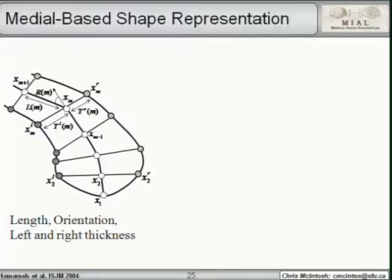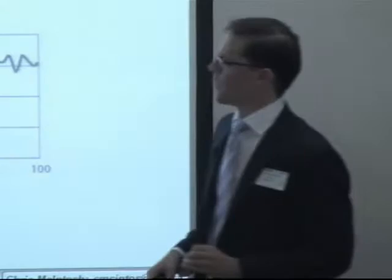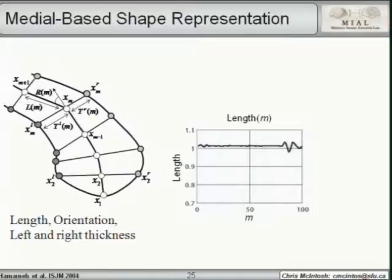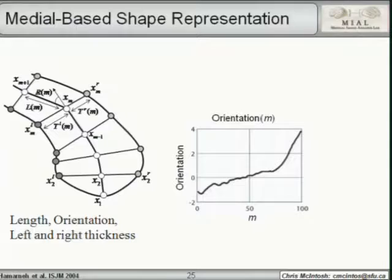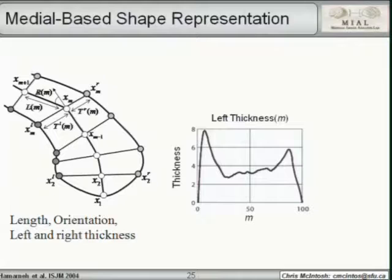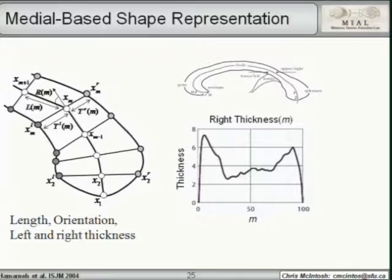Instead, we use a medial-based shape representation studying medial orientation profiles. For nodes X1 through XN along the medial axis, we record: a length profile (distance between sequential medial nodes), an orientation profile (orientational offset between nodes), and left/right thickness profiles (distance at 90 degrees from the medial axis to the boundary on each side). These profiles allow reconstruction of a 2D or 3D shape.